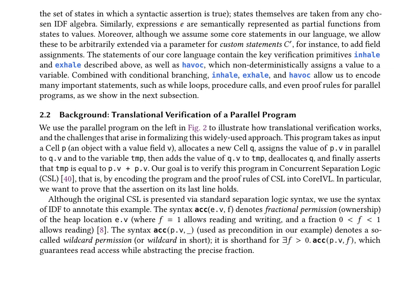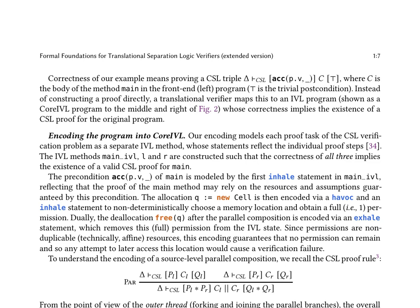This involves proving that the assertion on the last line holds, which can be achieved by leveraging the syntax of IDF to annotate the program. The IDF syntax includes fractional permission and wildcard permissions, which are used to manage read and write access to heap locations. The paper demonstrates how the correctness of an example program can be proven by mapping it to an IVL program, whose correctness implies the existence of a valid CSL proof for the original program.